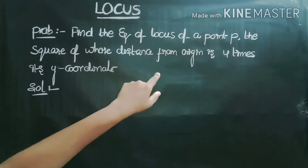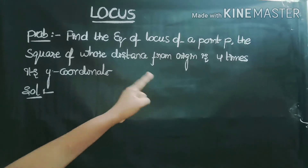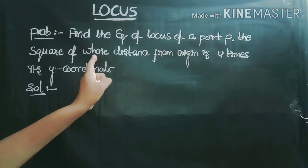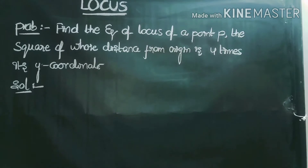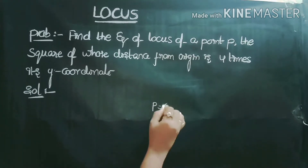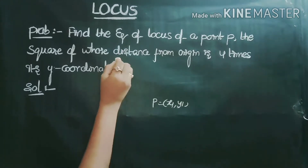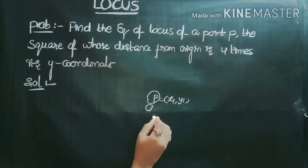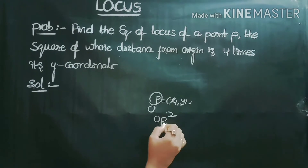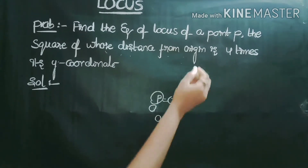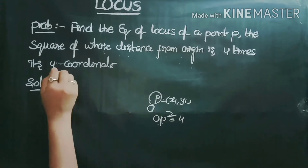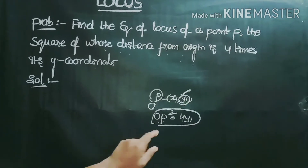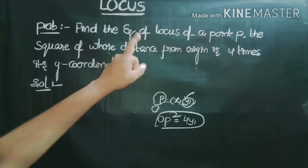Find the equation of locus of a point P, the square of whose distance from the origin is 4 times its y-coordinate. The given condition is: OP², the square of the distance of P from the origin, equals 4 times the y-coordinate of P, that is OP² = 4y1.